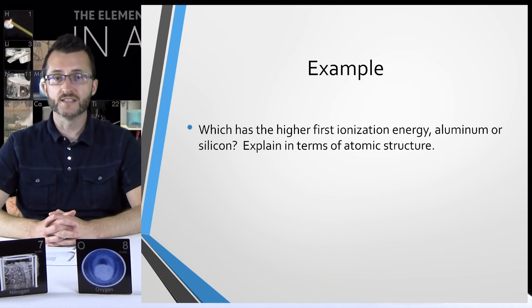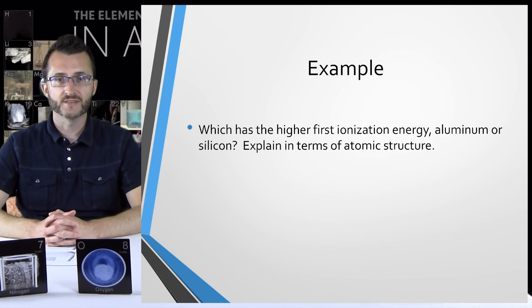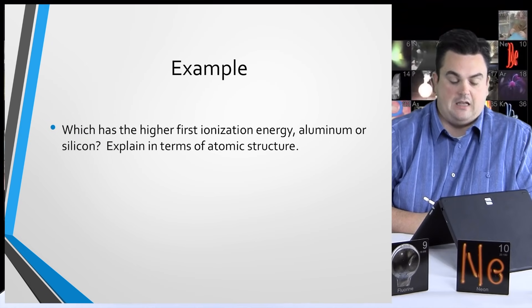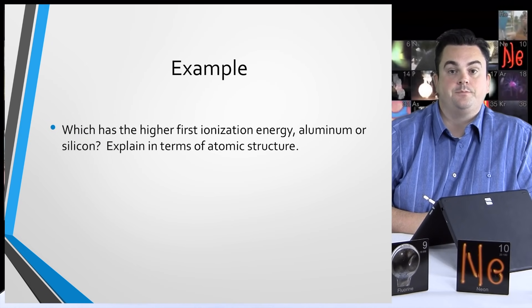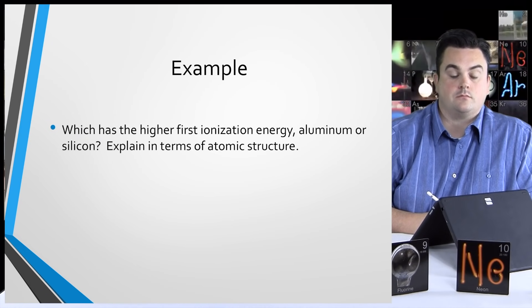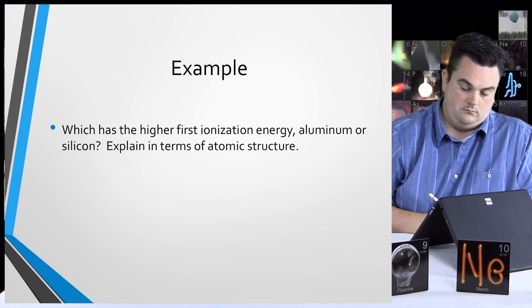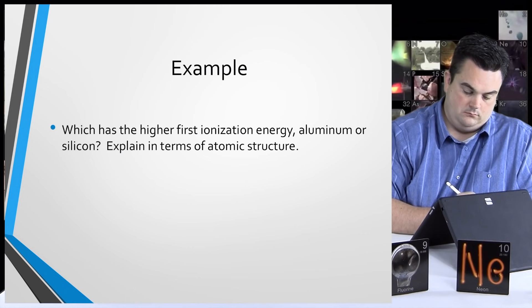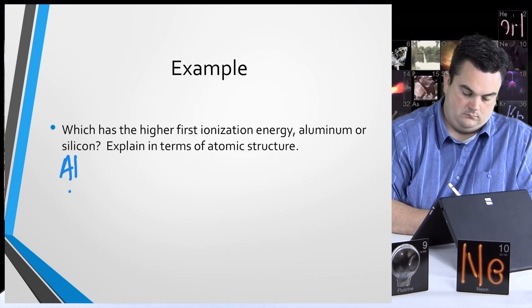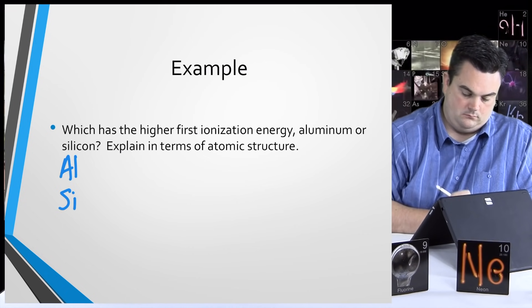Let's take a look at another example. Which has the higher first ionization energy — aluminum or silicon? Explain in terms of atomic structure. Let's take a look at the periodic table first and find Al and Si. They are in the same period.